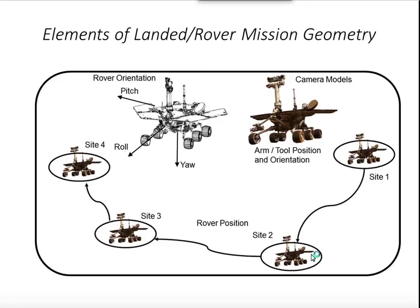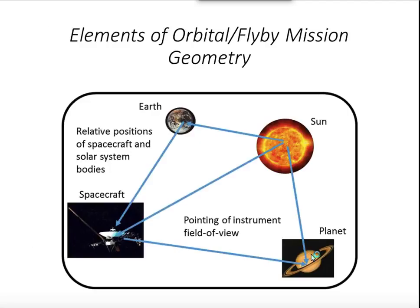And also information on the arm and tools as a function of time. For orbital elements, we have classes related to positions and velocity vectors. You could specify vectors of a spacecraft relative to the Earth, Sun, and its target. If you have multiple targets, say you're looking at Saturn and some of its moons, you could repeat those set of classes to specify the geometry for the main body and any other bodies that might be in the field of view.